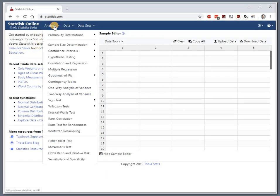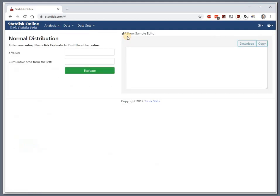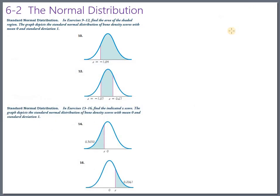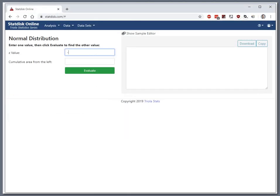Under analysis, we want to go to probability distributions, and we want the normal distribution. And we had a z value. Oh, my memory is terrible. What was it? 1.04. Negative 1.04. So negative 1.04. And let's evaluate that.